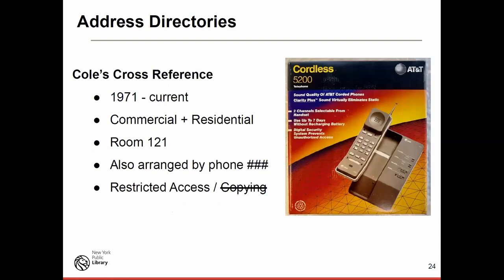Cole's is a company that started publishing detailed cross-reference address directories, not just for New York City but for other cities as well. For New York, collections begin in 1971. There are address directories listing residents, whether commercial or not. These are print editions with restrictions — we can't photocopy or send photos remotely due to our contract with Cole's. Depending on the year, they're also arranged by phone number, which occasionally comes in handy.